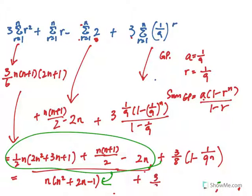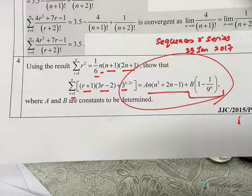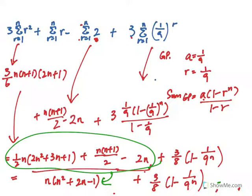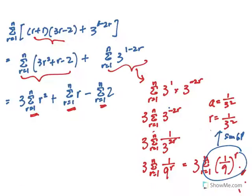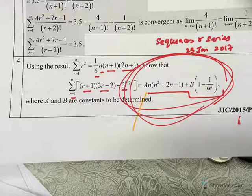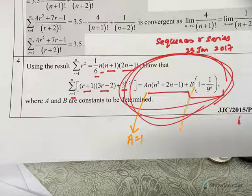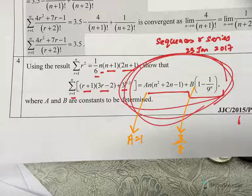And on the right hand side, 3/8 times (1 - 1/9^n). Very quickly, comparing the original equation, comparing this equation, you can see that A, basically here, A is just equals to 1, B equals to 3/8. So going back to the question, A equals to 1, and B is just equals to 3/8. And we are done with this question. Thank you.